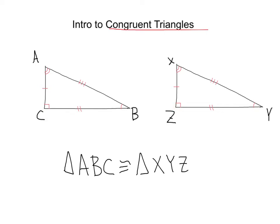Let's go ahead and move on. Let's look at this first side: side AB, that should match with side XY. Here we've got side AB with three congruent dashes, and here we've got side XY with three congruent dashes — so that is true as well.